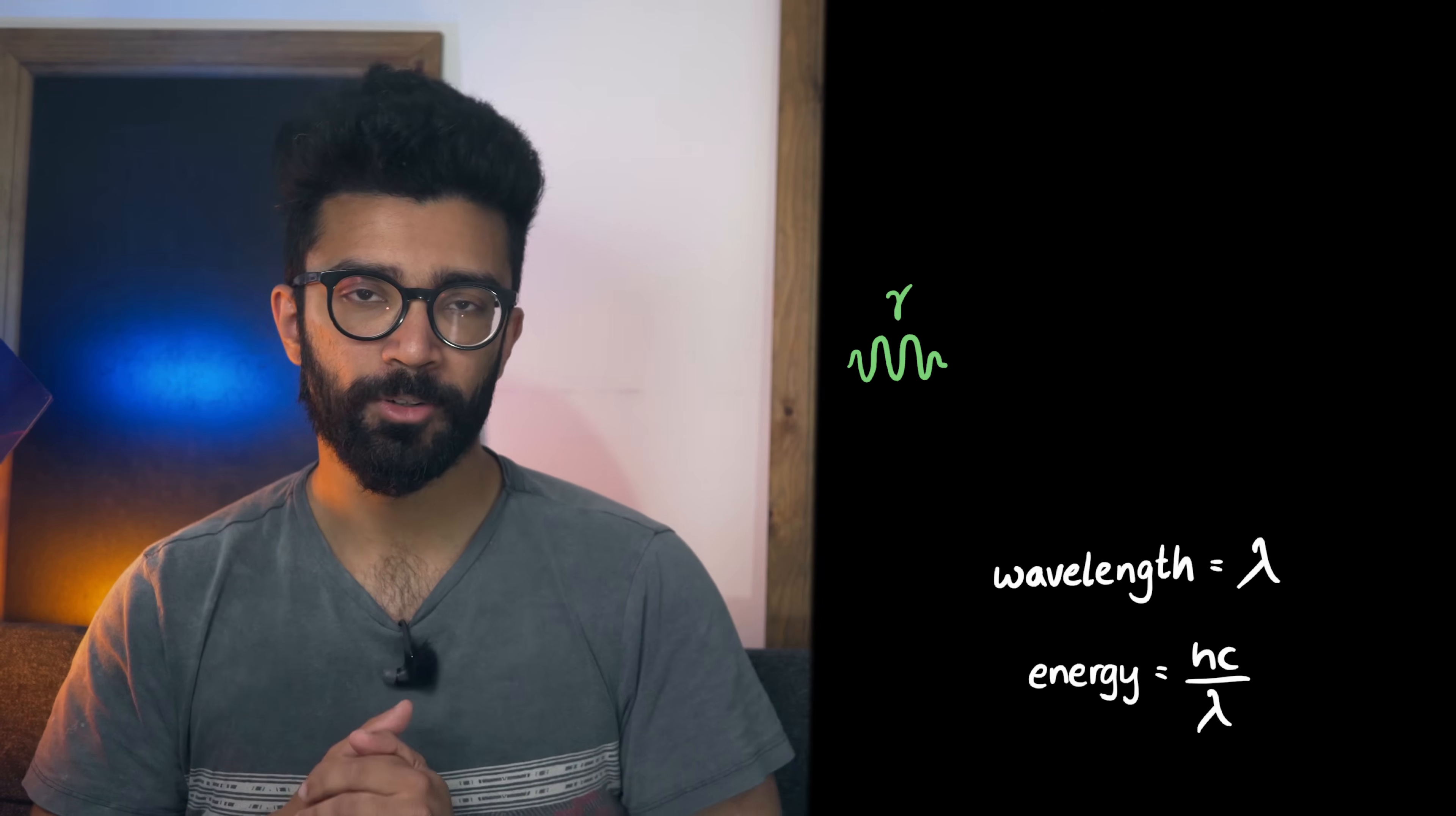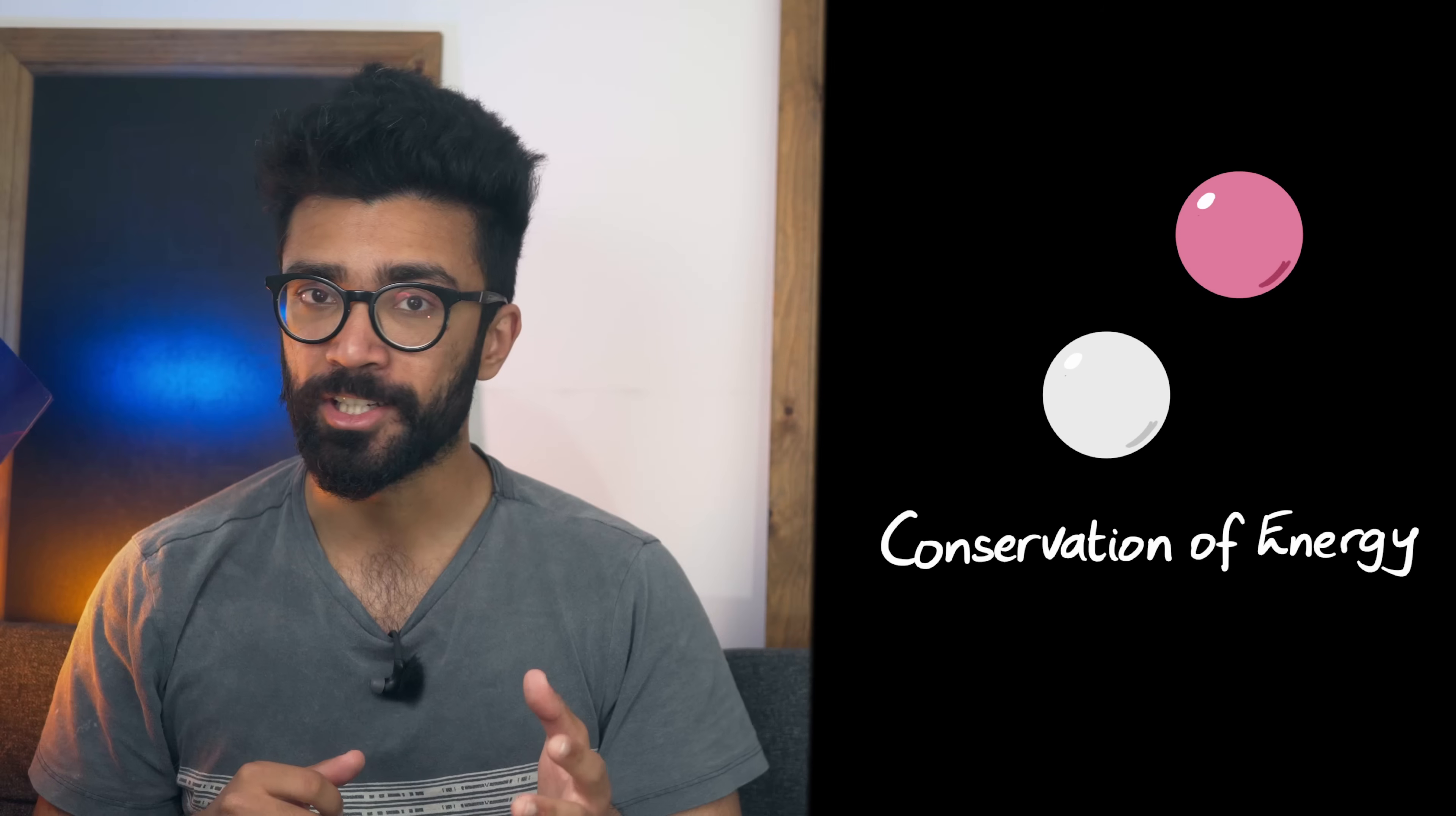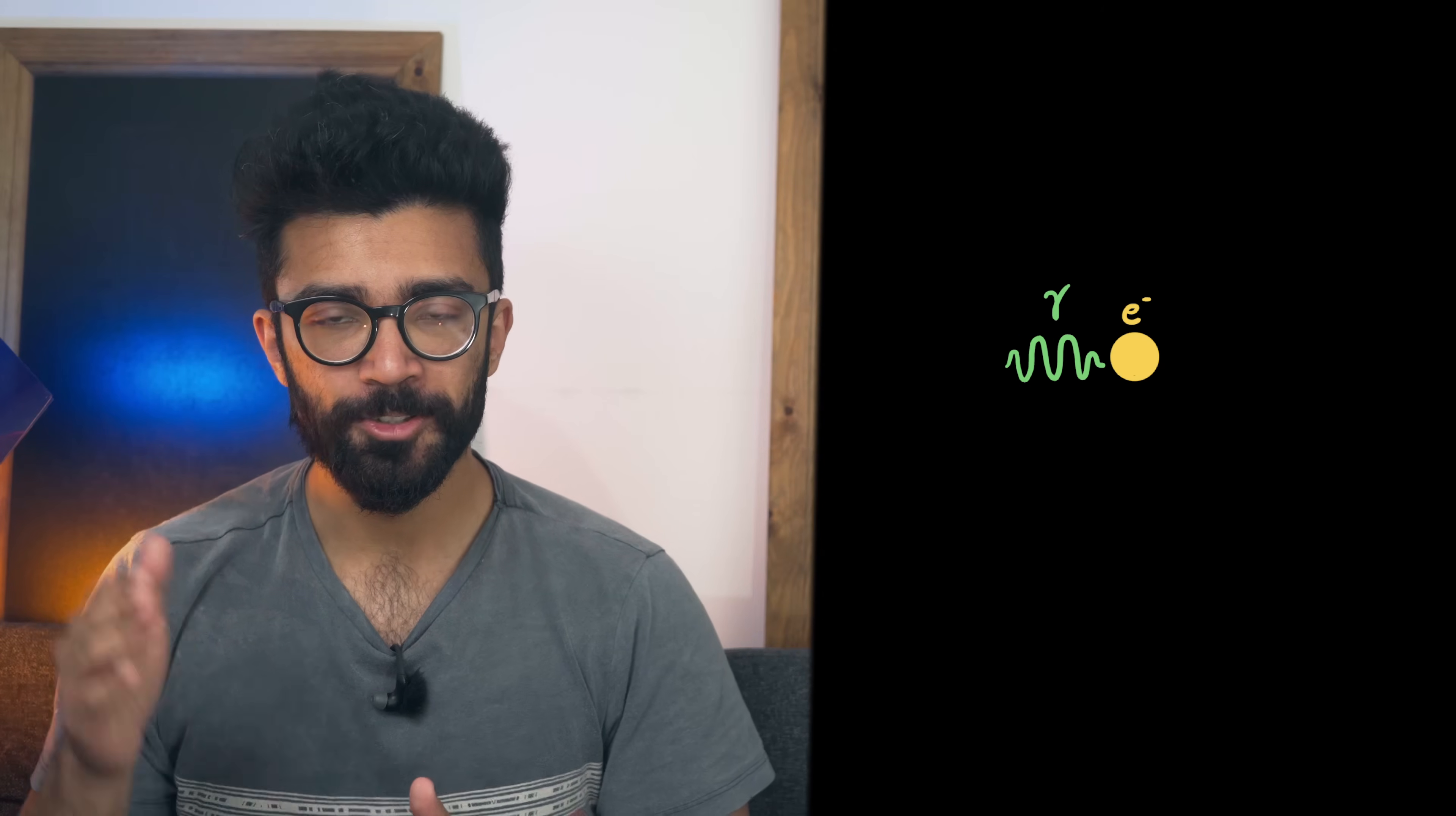Anyway so this photon that we're talking about is traveling let's say in this direction and it interacts with this electron that we initially saw to be stationary. The electron and photon interact in a surprisingly similar way to two pool balls colliding with each other because we can use conservation of energy and conservation of momentum to work out how much of the photon's energy is transferred to the electron.